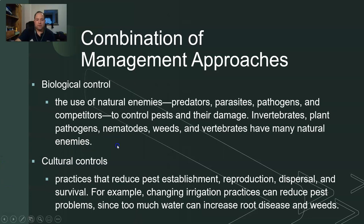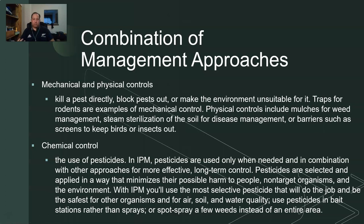With mechanical and physical controls, you're trying to kill a pest directly, block it out, or make the environment unsuitable for it. Trapping rodents is an example of mechanical control. In Texas, they're actually having people pay to hunt and kill feral hogs — that's a physical control. Other examples include using mulch for weed management, steam sterilization of the soil for disease management, or having screens at your house to keep birds or insects out. If you live in Florida, screens around your patio to keep alligators out of your backyard pool.